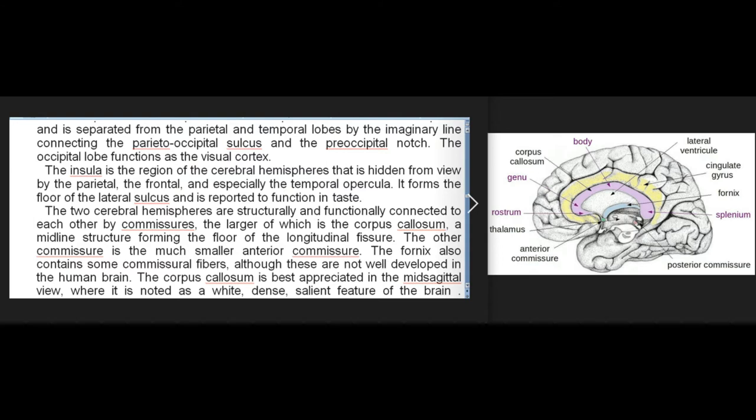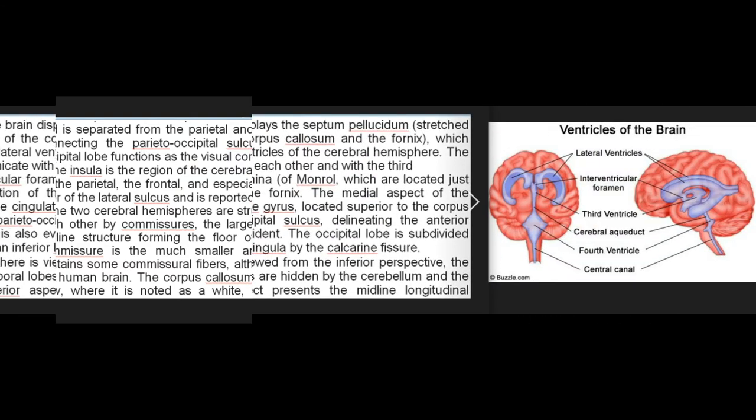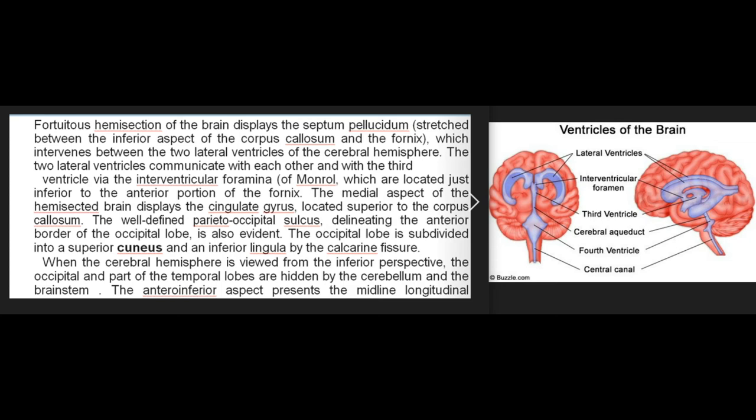The two cerebral hemispheres are structurally and functionally connected to each other by commissures, the larger of which is the corpus callosum, a midline structure forming the floor of the longitudinal fissure. The other commissure is the much smaller anterior commissure; the fornix also contains some commissural fibers, though these are not well developed in the human brain. The corpus callosum is best appreciated in the midsagittal view. A hemisection of the brain displays the septum pellucidum stretched between the inferior aspect of the corpus callosum and the fornix, which intervenes between the two lateral ventricles. The two lateral ventricles communicate with the third ventricle via the interventricular foramina of Monro, located just inferior to the anterior portion of the fornix.